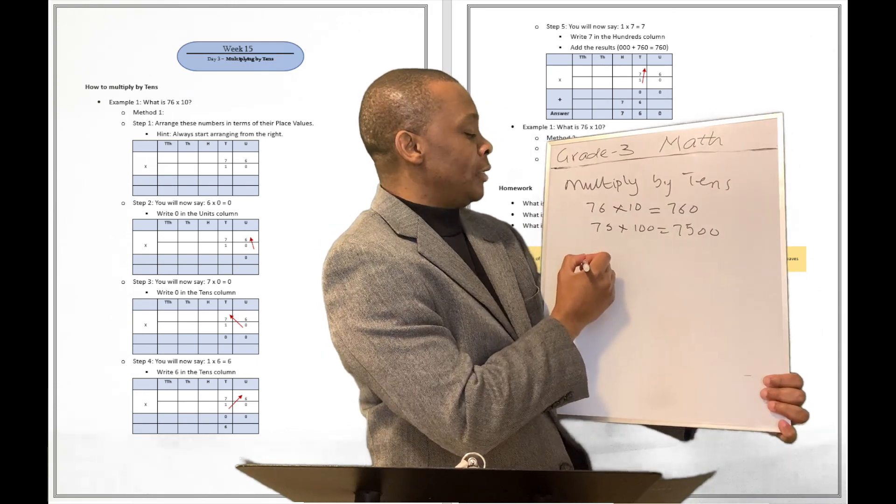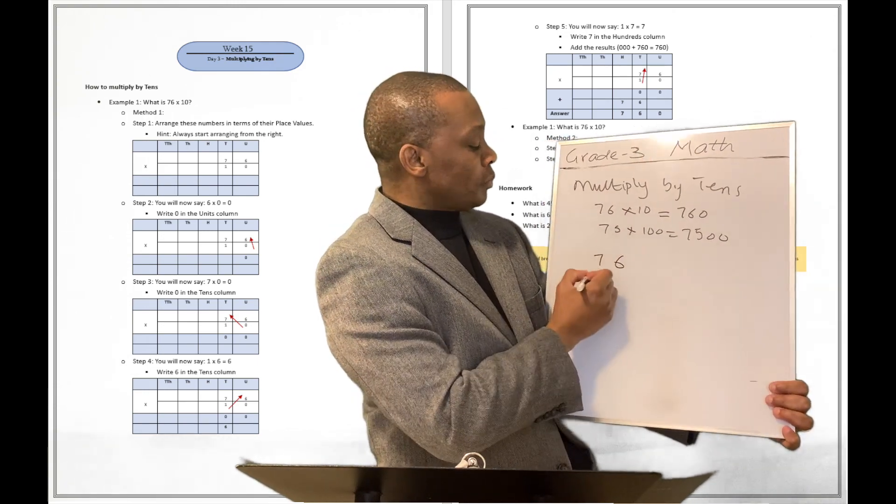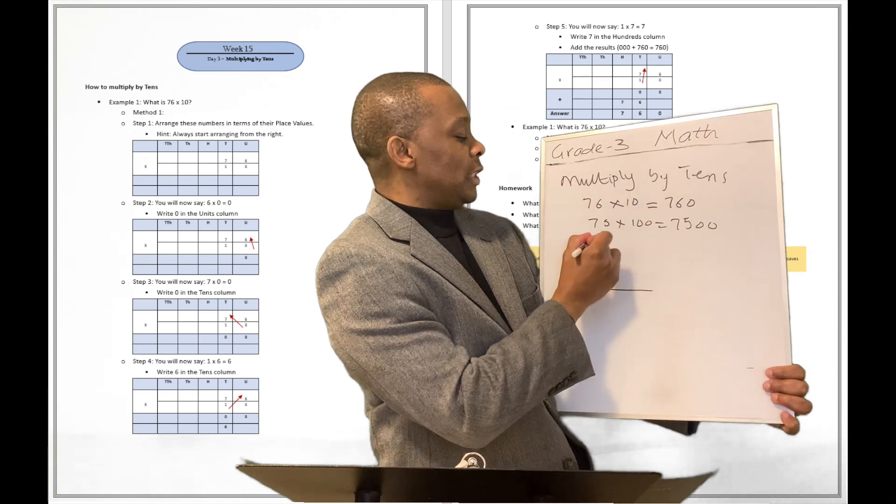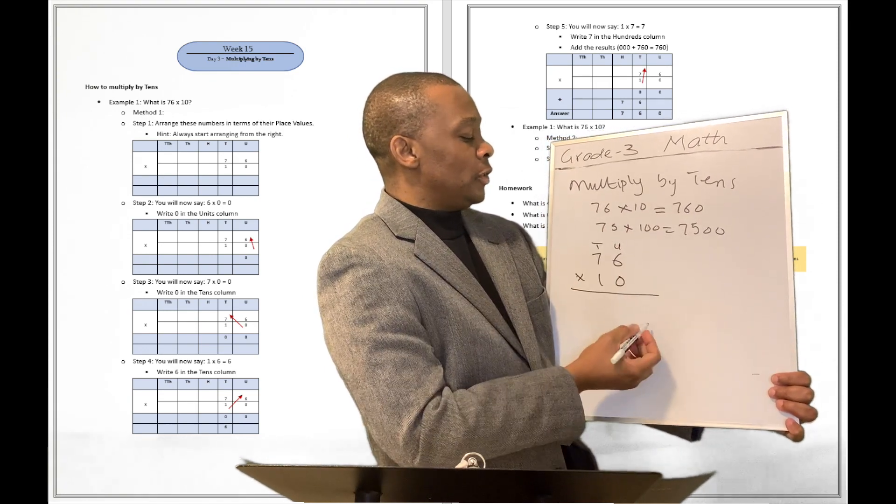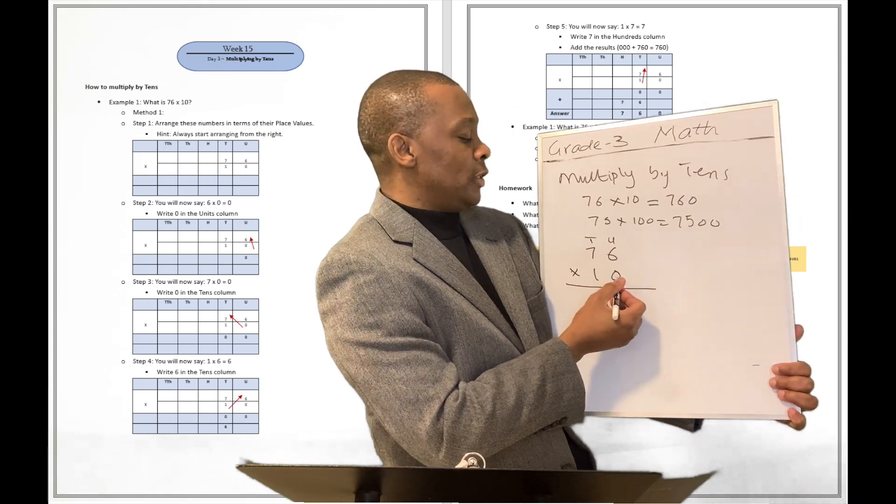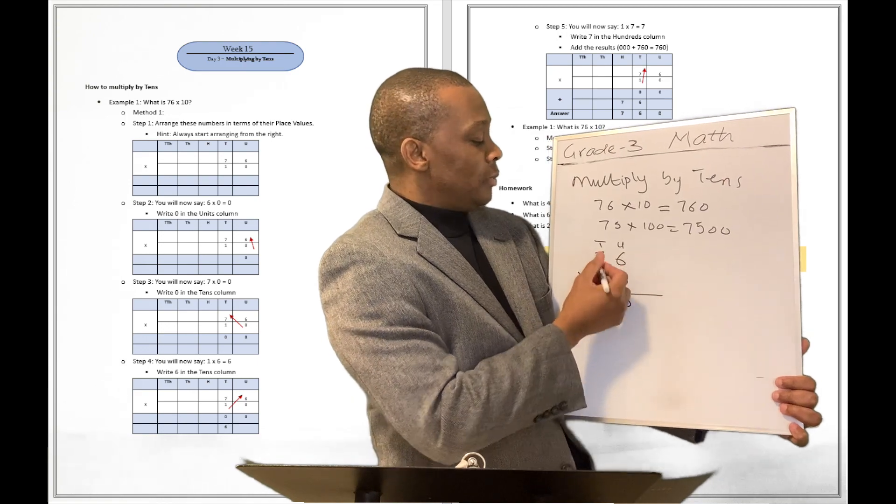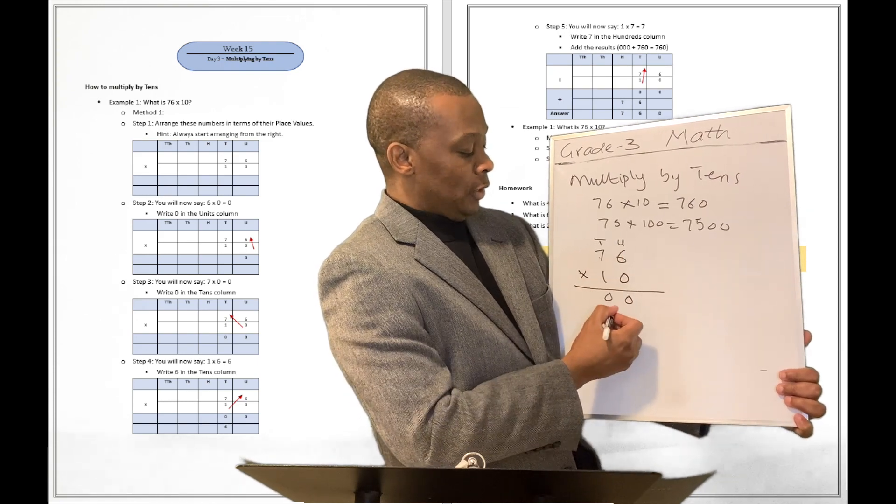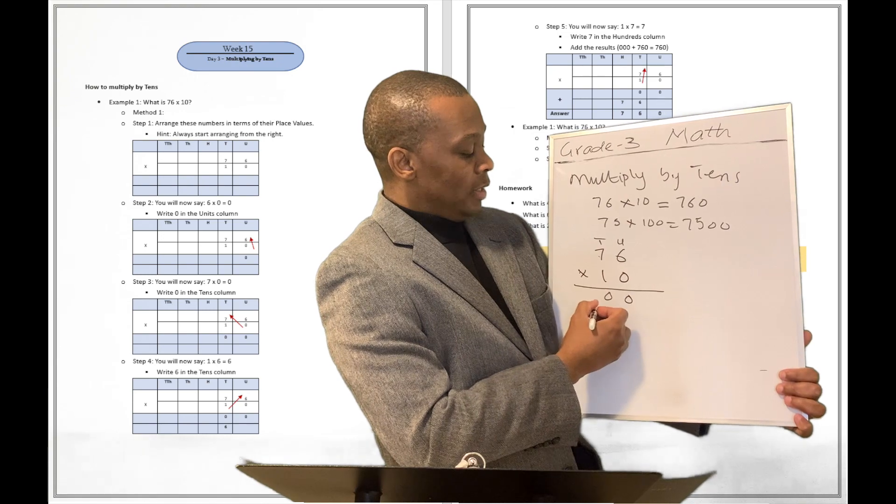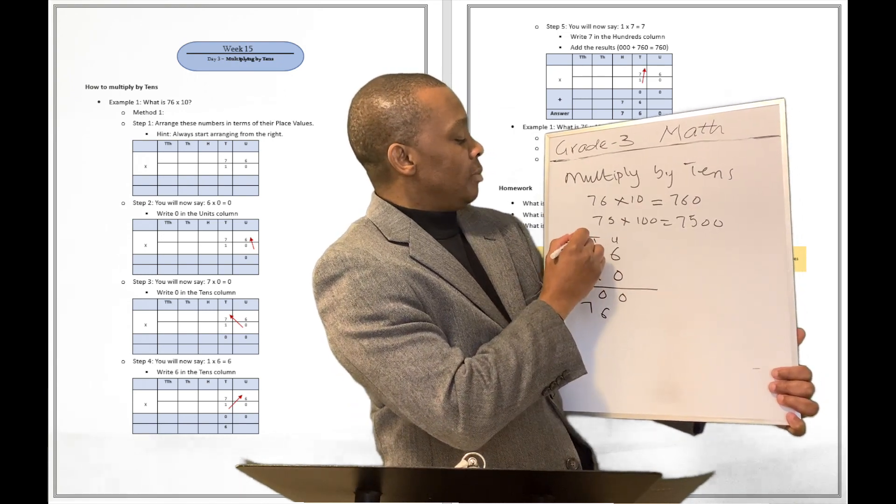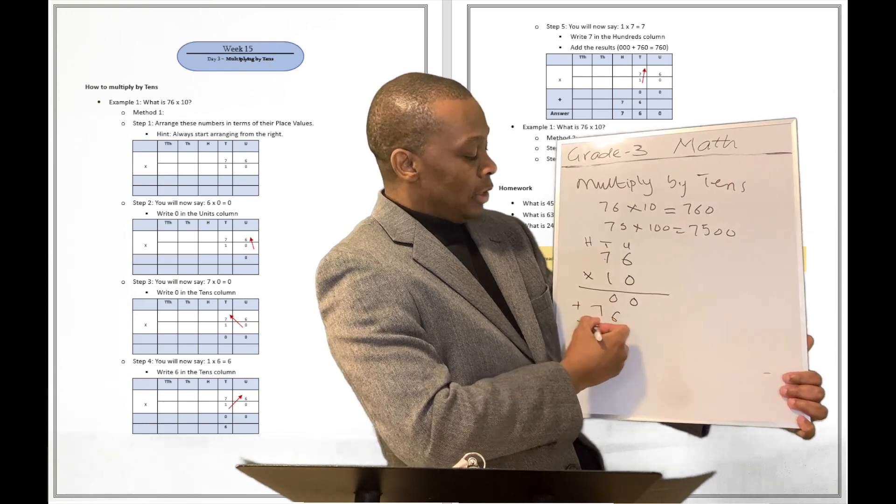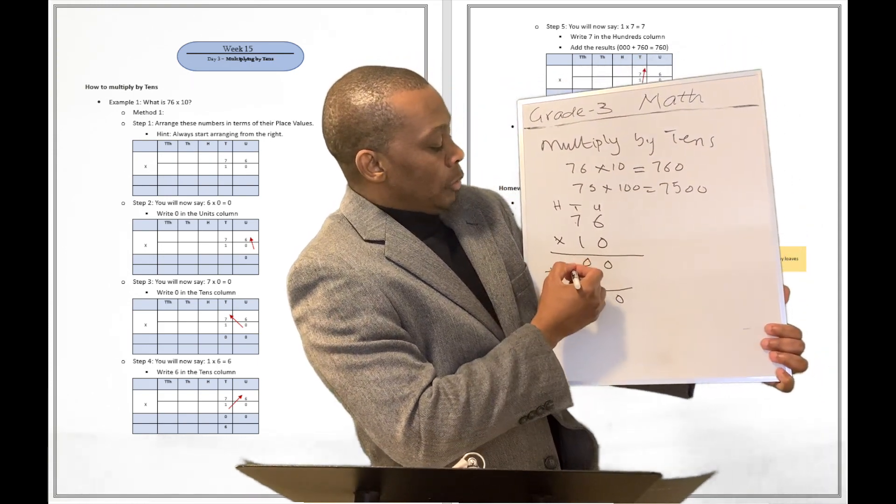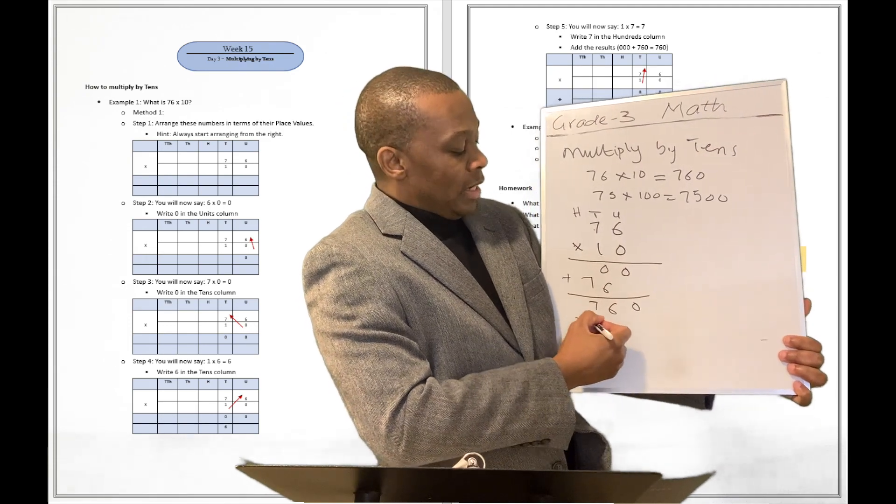But the real way to do it is to arrange it in terms of your place values. And then you're going to separate it into the digits just like this. So, you're going to say 76 multiplied by 10. You're going to start with the first digit to the right. You're going to say 0 times 6. That's a 0. 0 times 7. That's a 0 as well. Then you're going to come over here. 1 times 6. That's a 6. 1 times 7. That's going to be a 7. Then you're going to add all this together. 0 plus nothing is 0. 0 plus 6 is 6. And then 0 plus 7 is 7. That gives you 760.